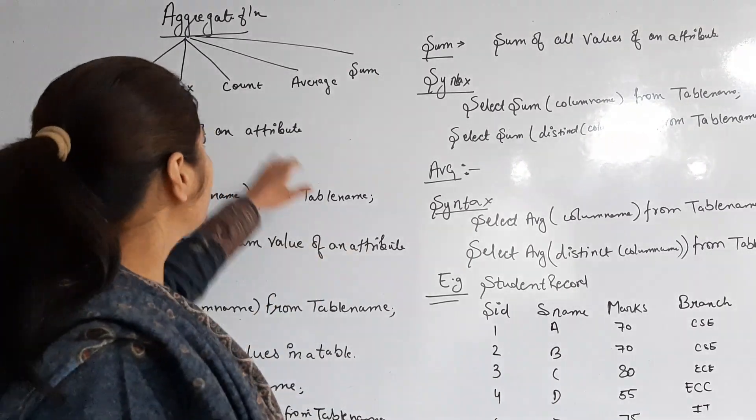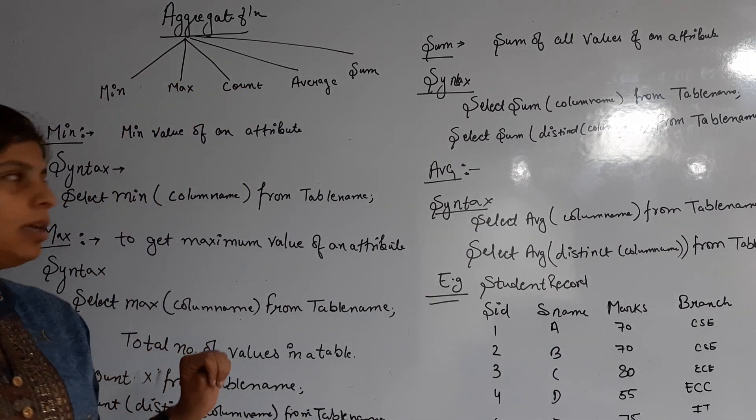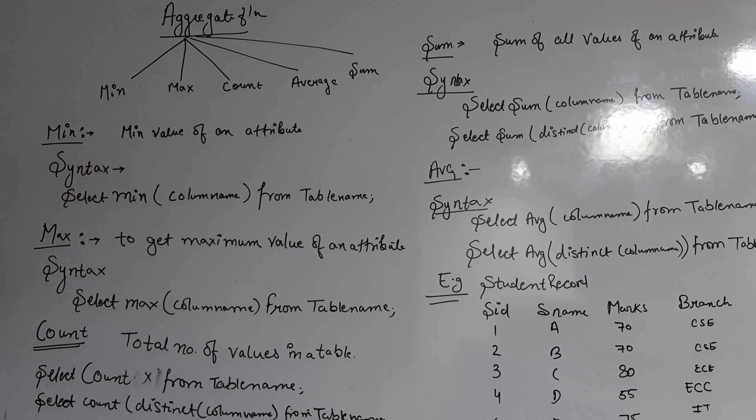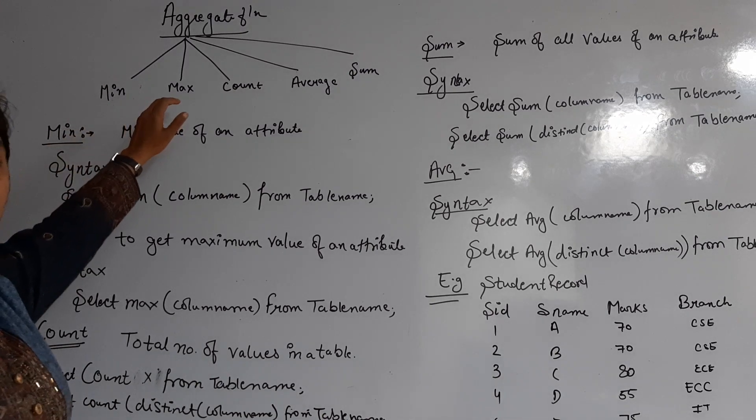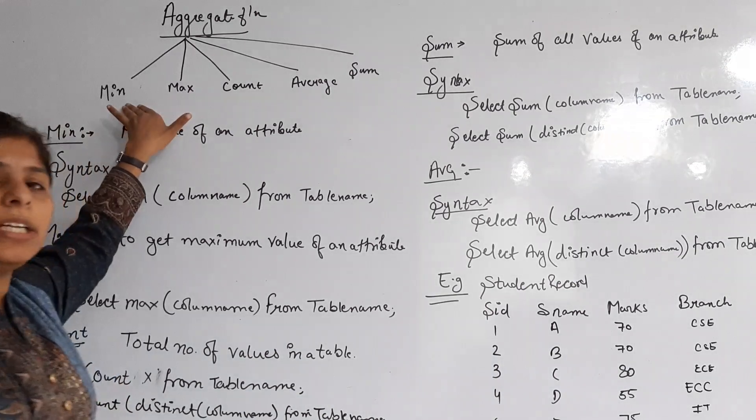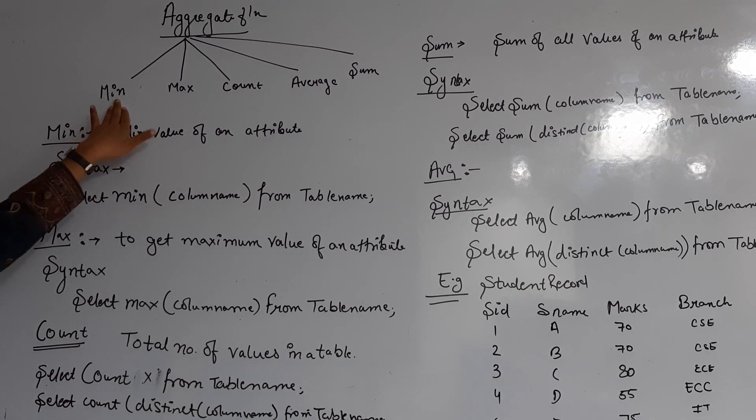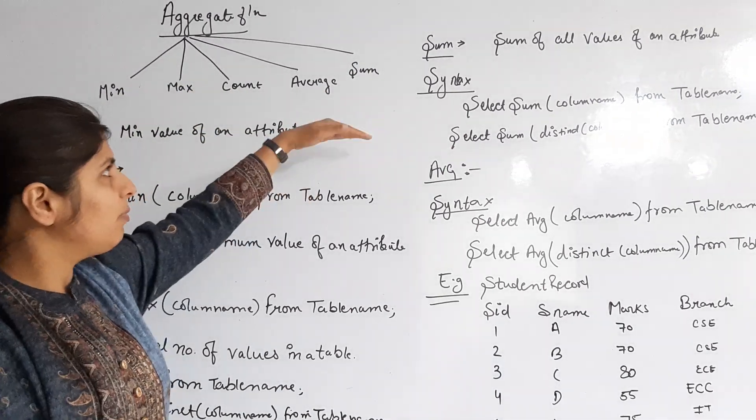Hello friend, in this video I am going to discuss the aggregate functions used in SQL. We are going to discuss the syntax used for writing the aggregate functions. There are five aggregate functions used in SQL: min, max, count, average, and sum. One by one we are going to discuss the syntax for writing minimum, maximum, count, average, and sum.